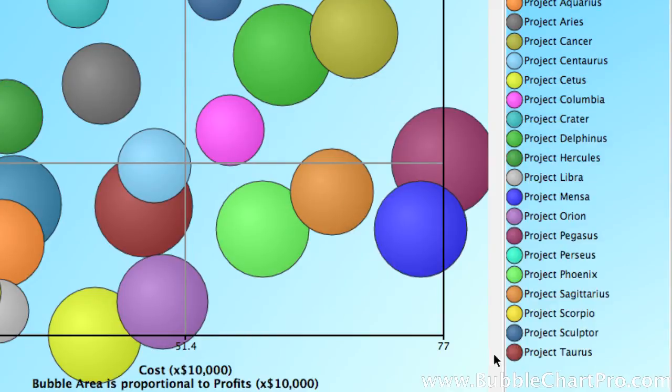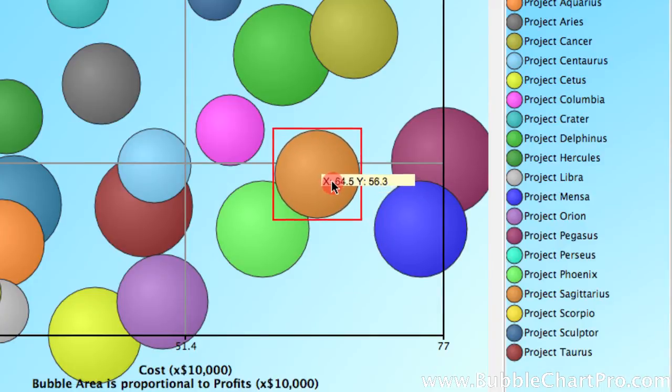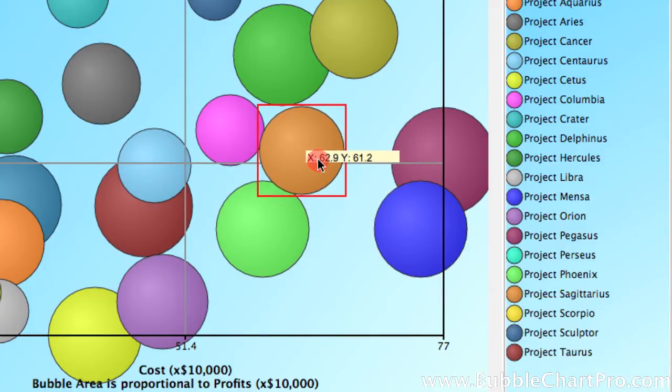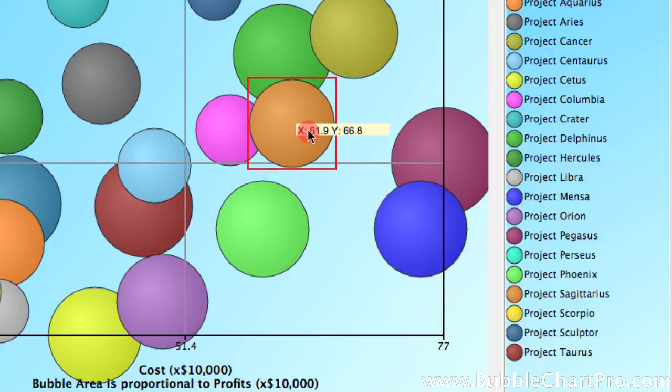We can also change the data by simply dragging and dropping the bubble. If I click on a bubble and hold the mouse down until it is selected, and then click on it again, I can move the bubble around, and notice that while I'm moving it, the underlying data relative to the coordinate is displayed. So, I can drop the bubble wherever I want by releasing the mouse and clicking outside the bubble to deselect it, and the data is automatically updated and saved.